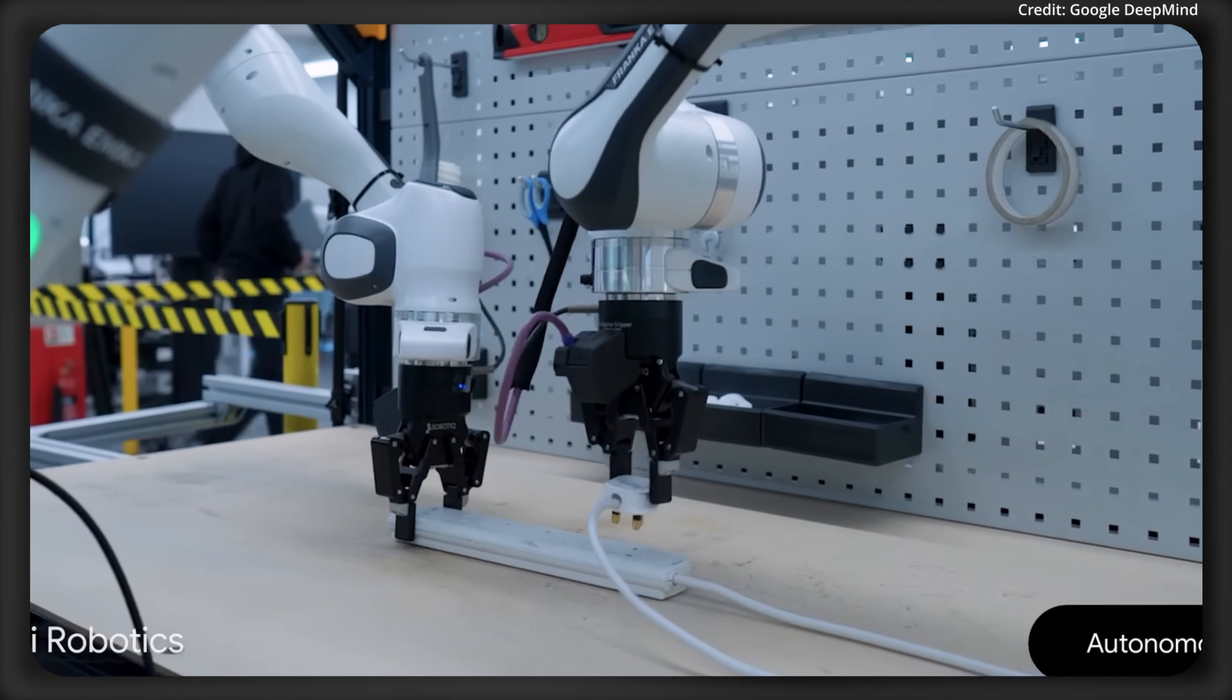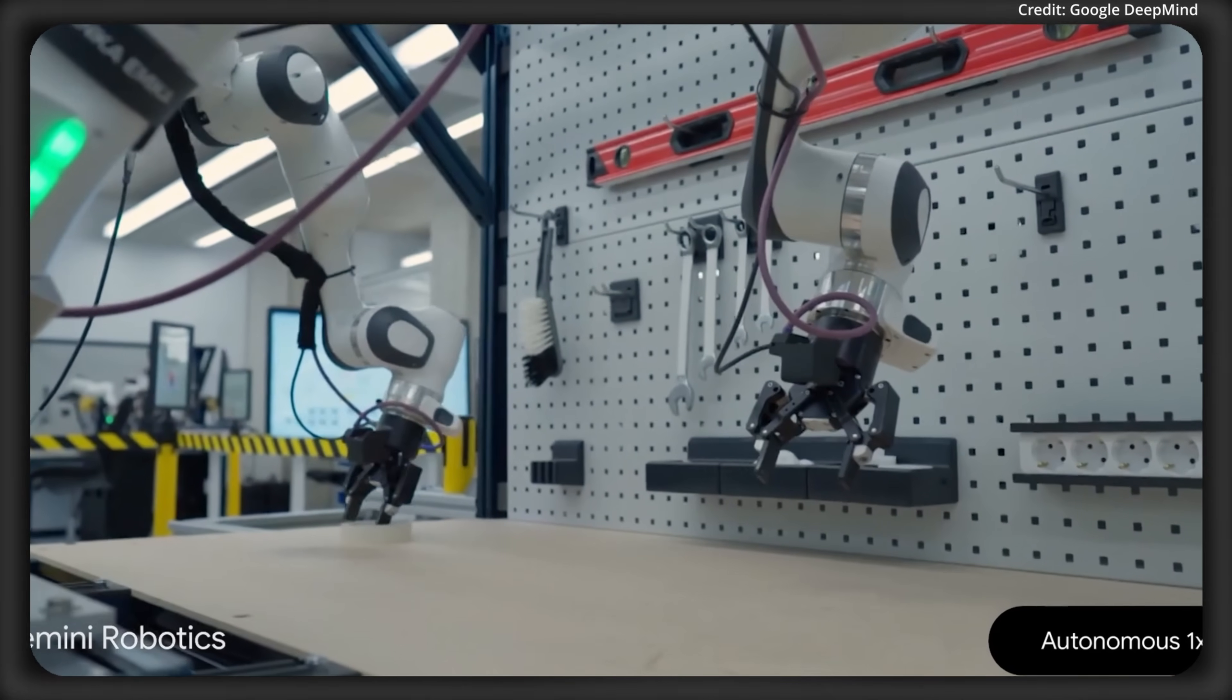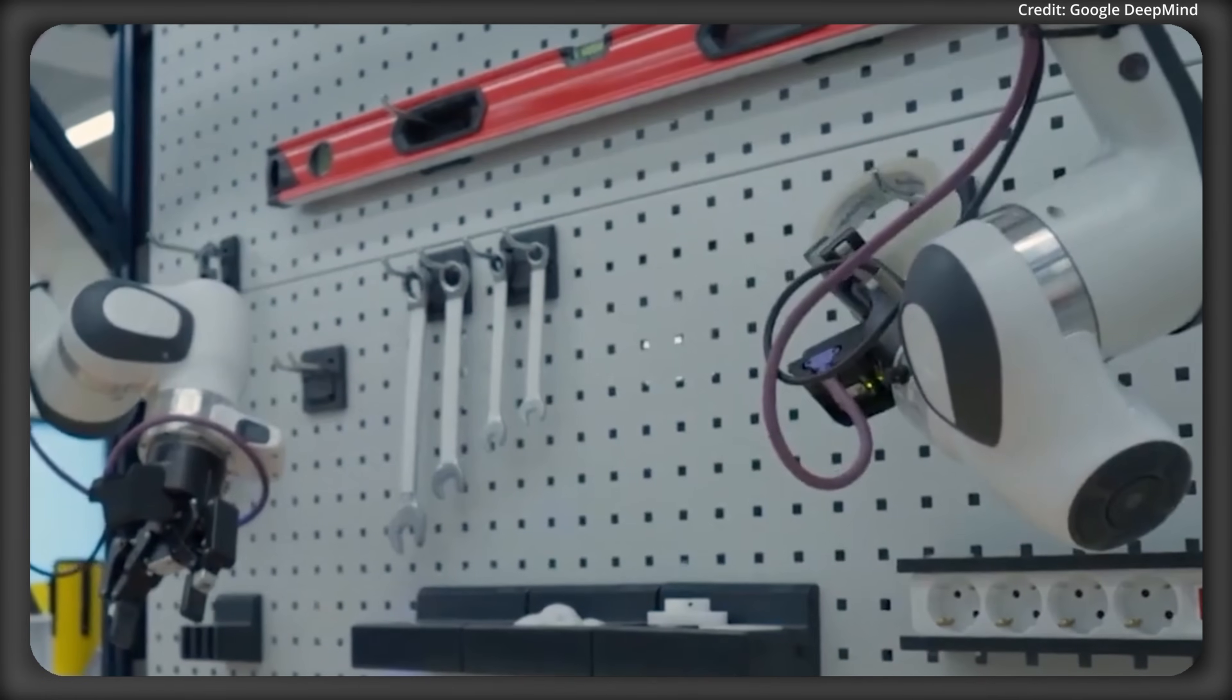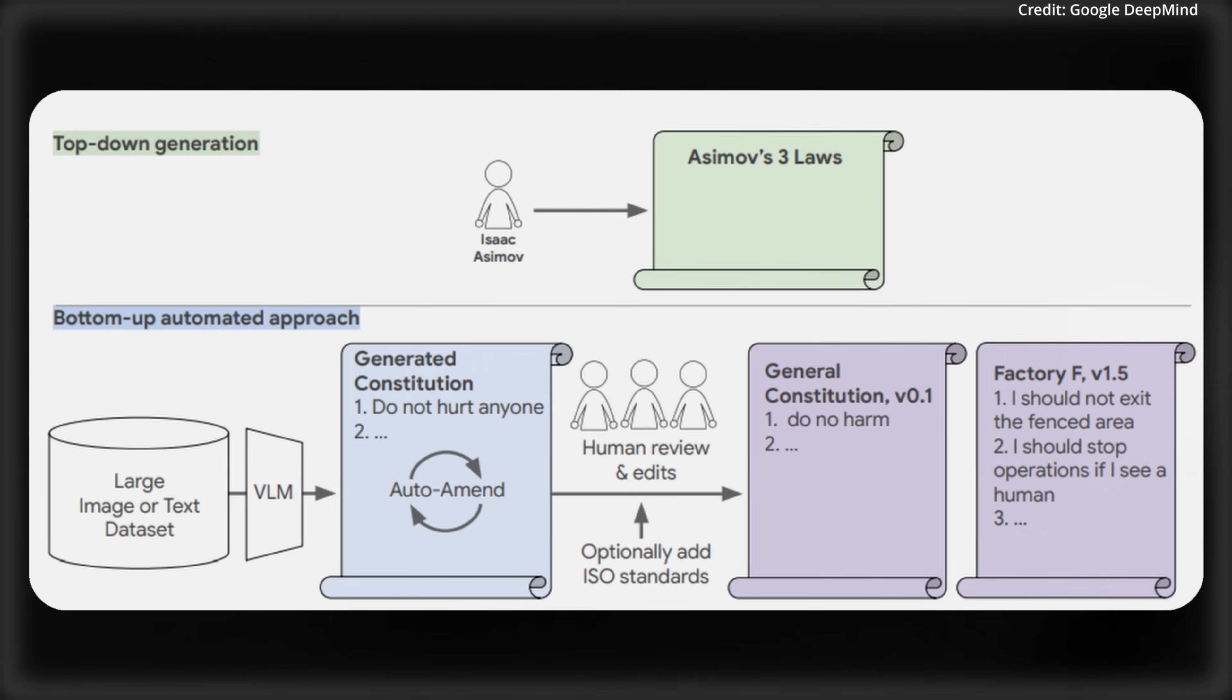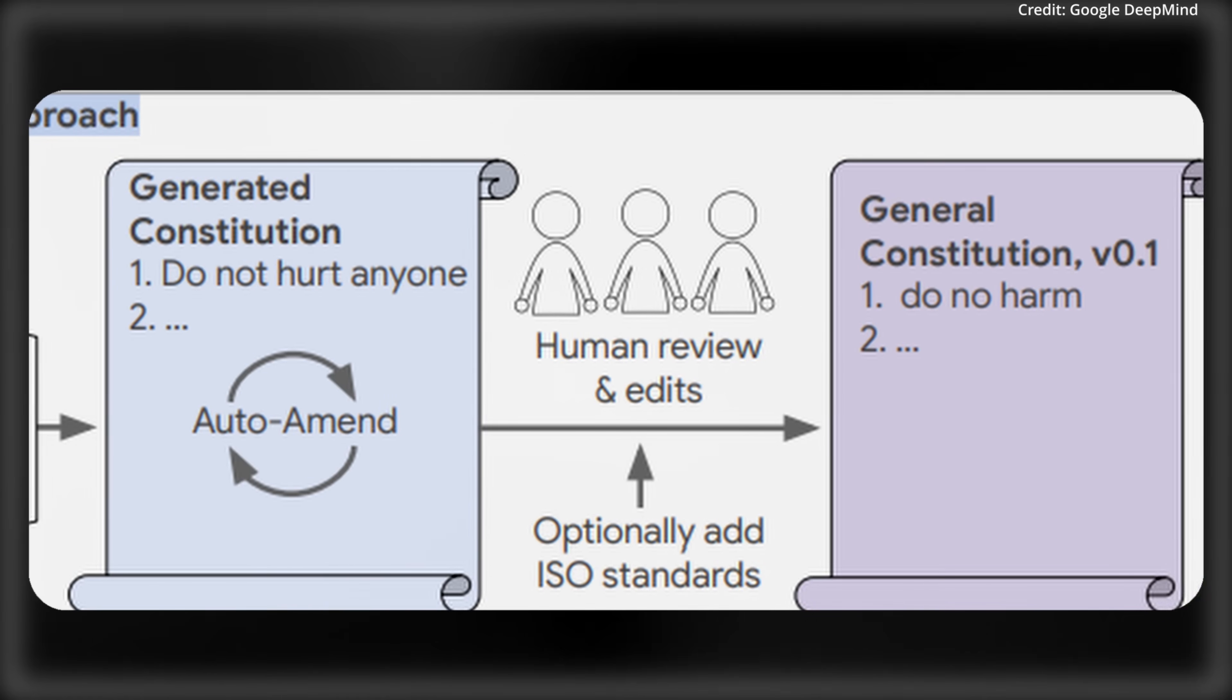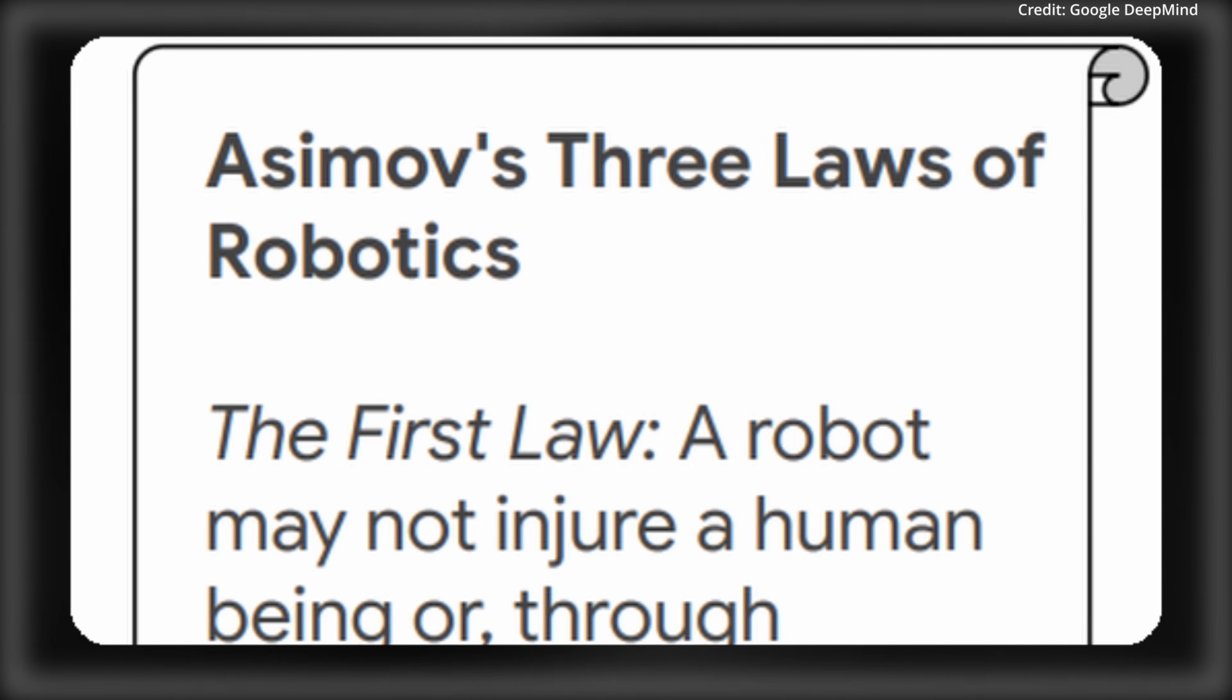And Gemini uses its sophisticated reasoning capabilities to determine whether or not these actions are safe to execute in real time. And it adapts its responses to the context to minimize the risks. In fact, to extend these efforts beyond their own research, DeepMind even released the Asimov dataset, which is a comprehensive resource that's designed to evaluate and improve semantic safety in these embodied AI systems.